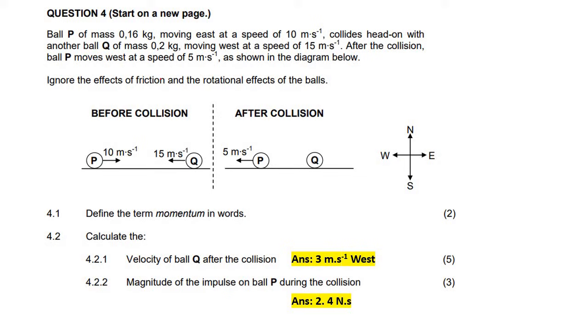In this question, we have a ball P which has a mass of 0.16 kg, moving east at a speed of 10 meters per second. It collides head-on with another ball Q, which is moving west. After the collision, ball P moves west, so ball P crashes into ball Q and ends up bouncing backwards.